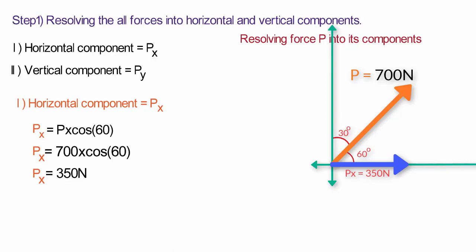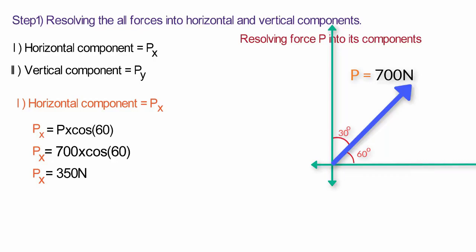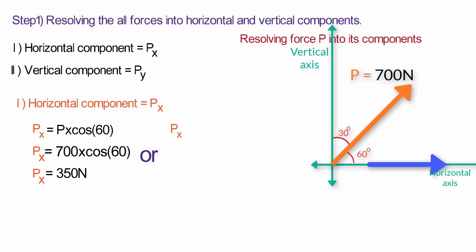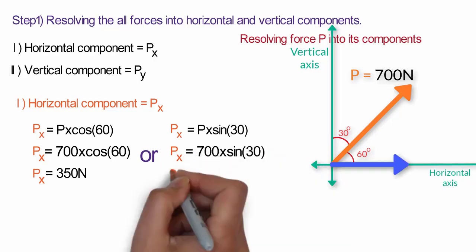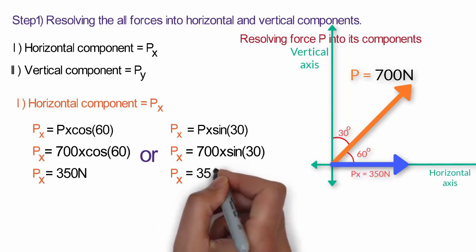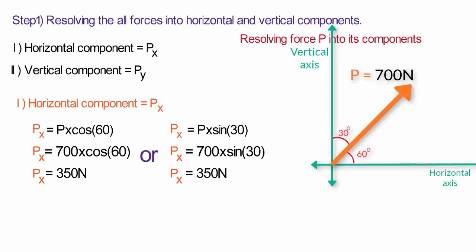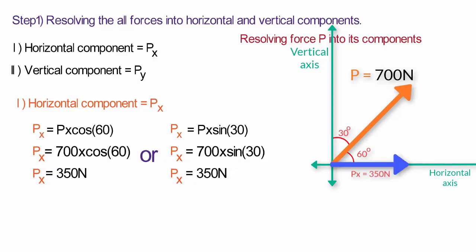Another way to find the horizontal component Px is to multiply force P by sin of the angle made by force P with the axis perpendicular to the horizontal — that is, sin of the angle with the vertical or y-axis. Since the angle with the y-axis is 30 degrees, Px = P × sin 30°, which also gives Px equal to 350 Newton. So whichever way we use, taking the angle properly, we get the correct value for the horizontal component.